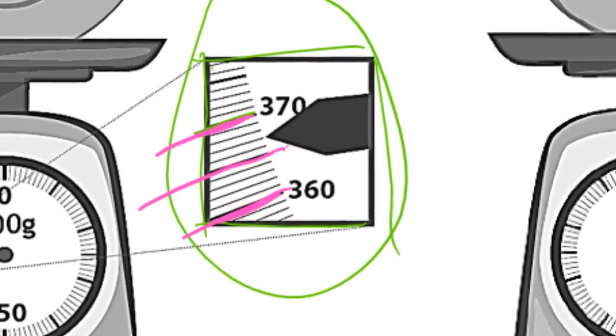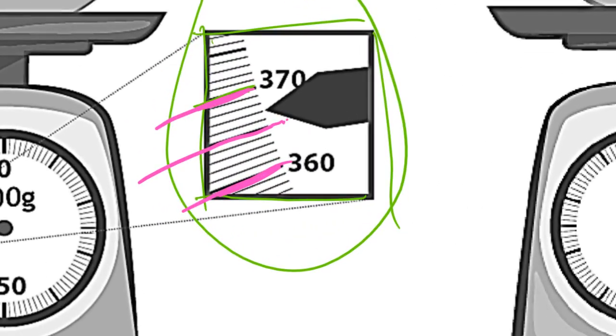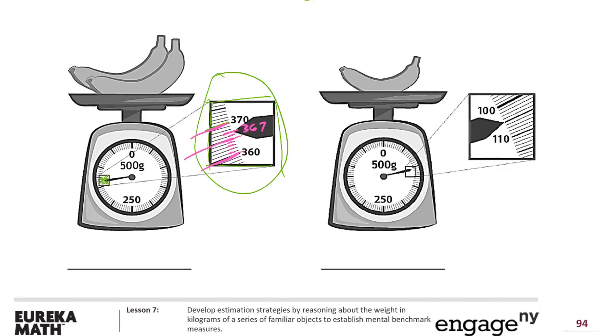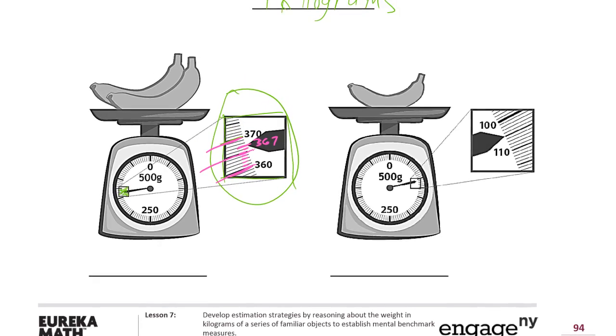We can see this goes all the way up to 500, but we have 370 here. 370 is here and 360 is here. So this dark line in the middle, that has to be 365, right? Because it's halfway in between 360. So you could count the little marks here: 361, 362, 363, 364, 365, 366, and here we are, 367 grams.